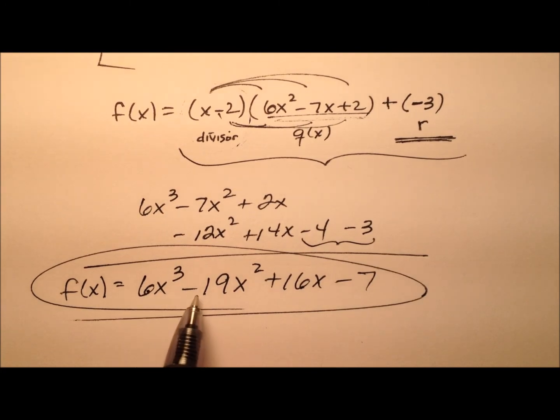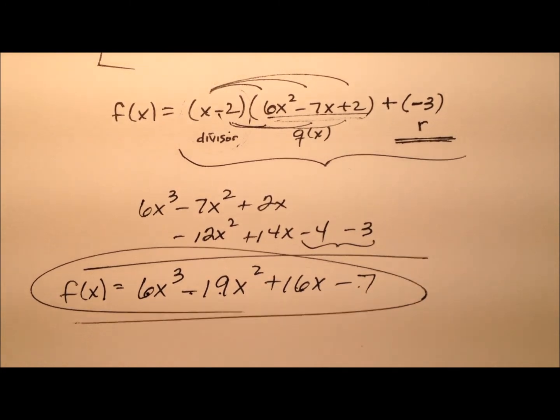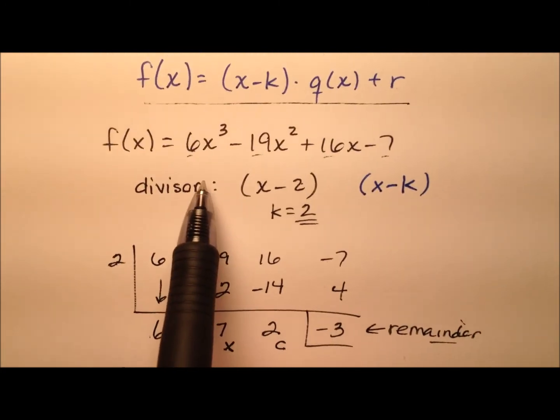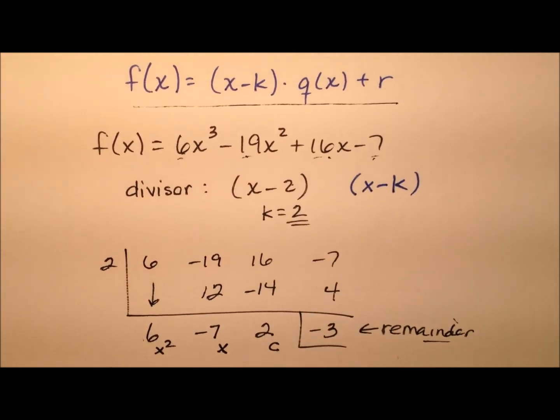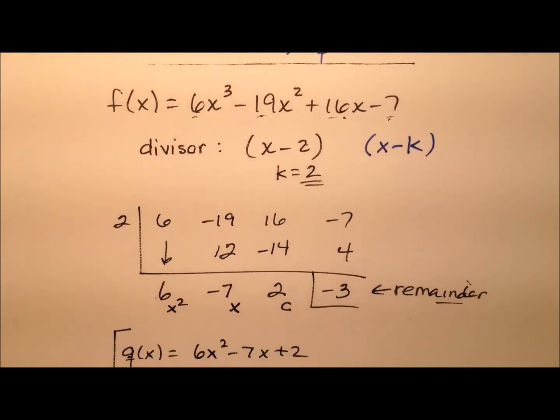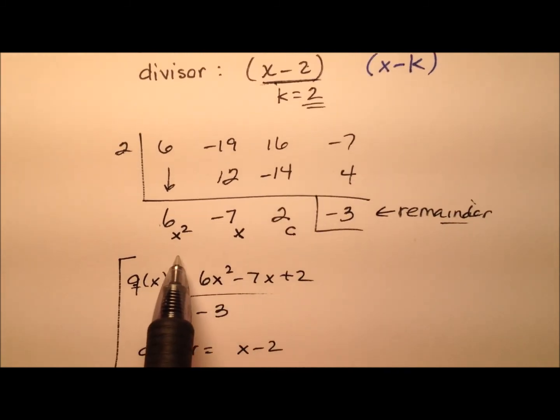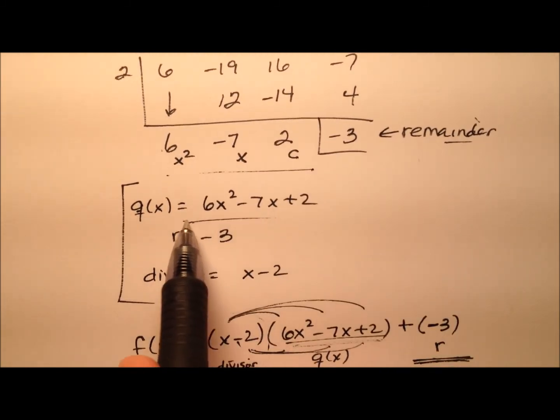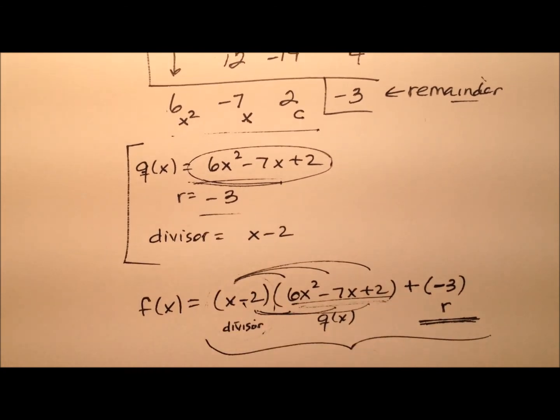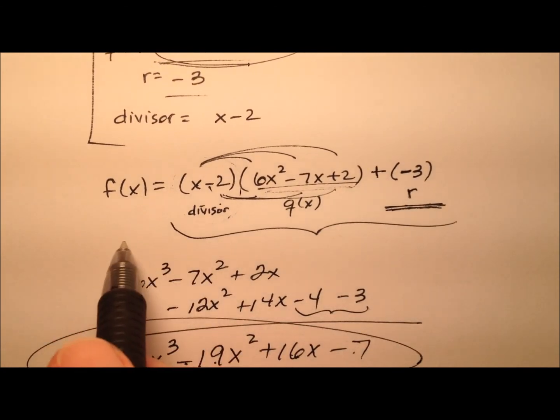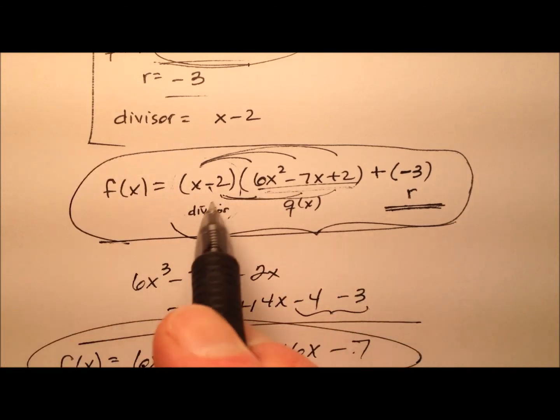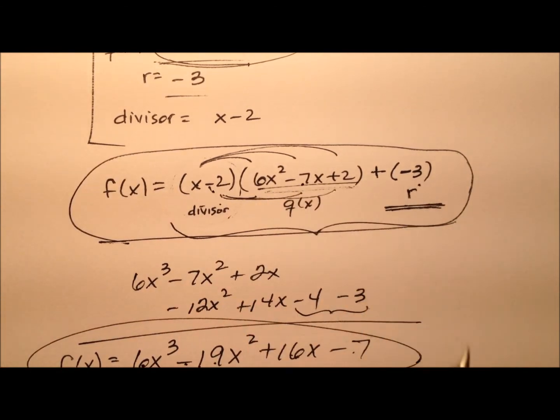So the coefficient 6, negative 19x, 16x, and negative 7. Back up to the top, 6, negative 19x, 16x, and negative 7. So we just changed the form it was in by using this divisor, going ahead and dividing it out, finding the quotient along with the remainder, and then writing it in this form where we have divisor times quotient plus remainder.